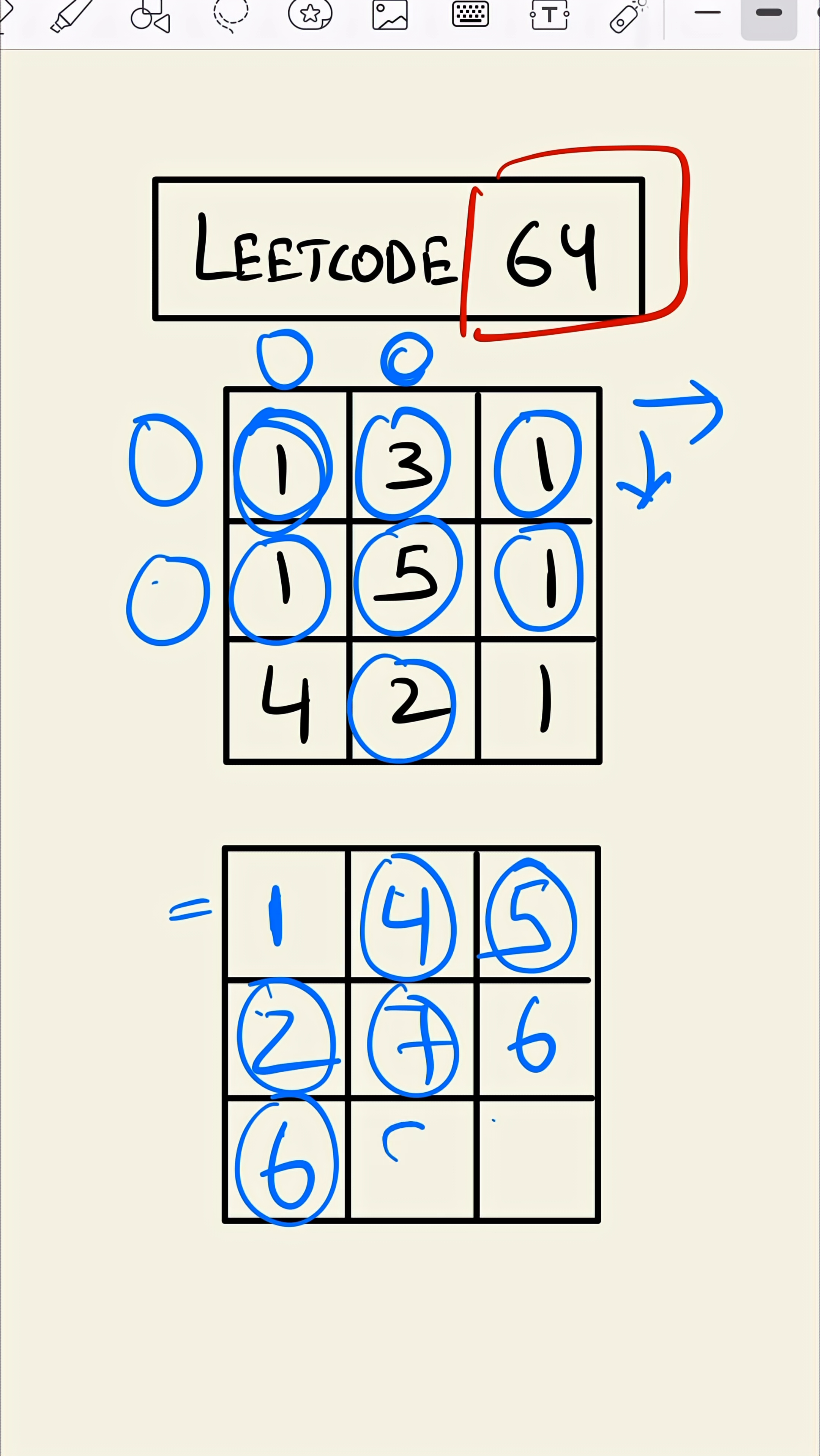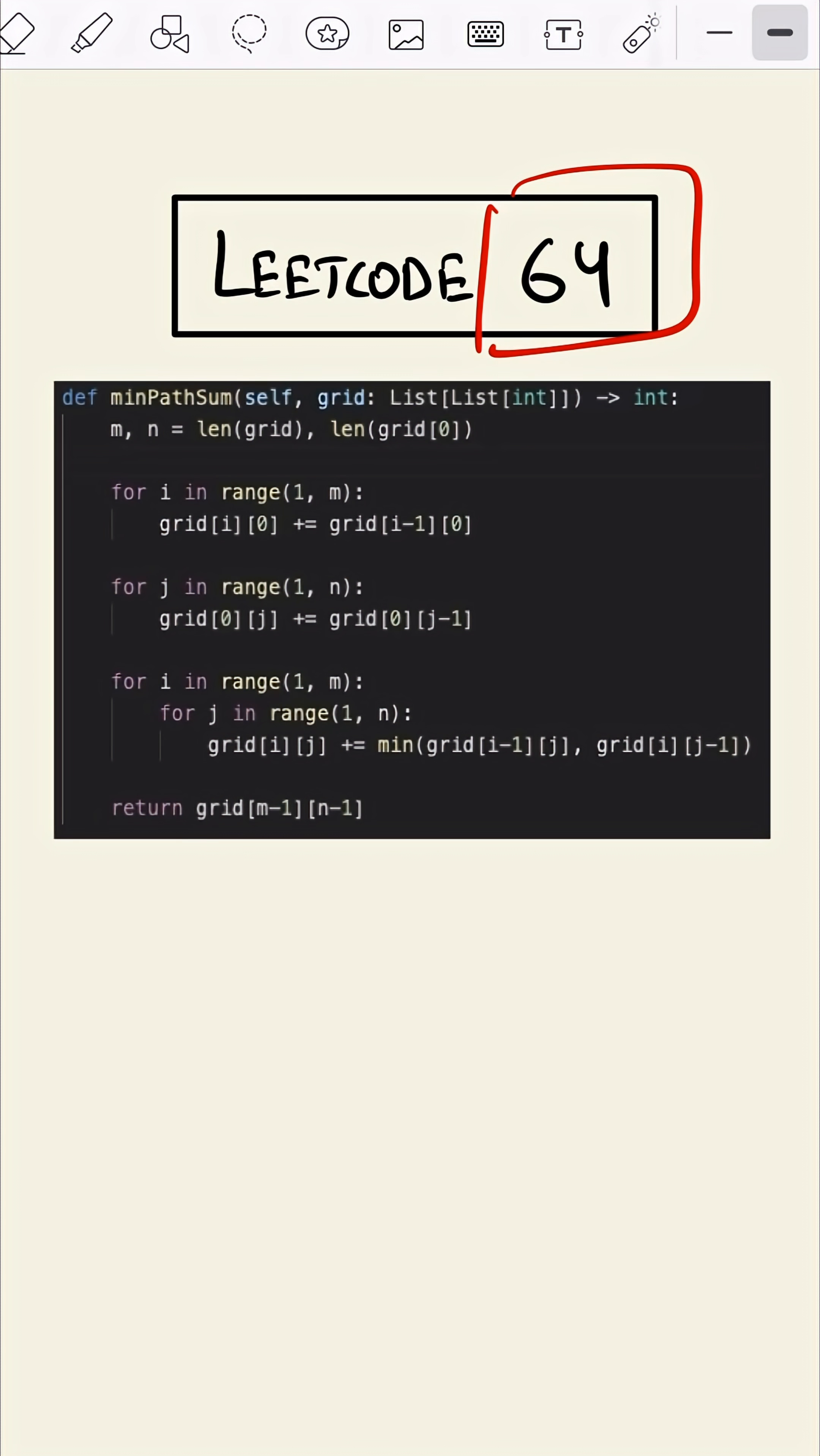Now for this value, the minimum of six or seven which is six, and six plus two is eight. And lastly for this value, the minimum of six or eight which is six plus the grid value seven. So seven is the minimum value to reach the bottom right.